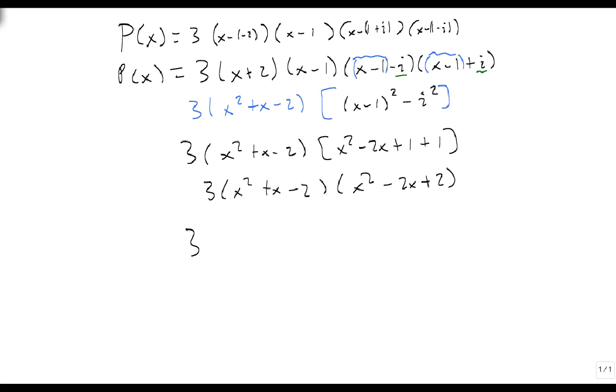And in order to go any farther, we're going to multiply this out. So we get x to the 4th minus 2x cubed plus 2x squared, plus x cubed minus 2x squared plus 2x, and minus 2x squared plus 4x minus 4.